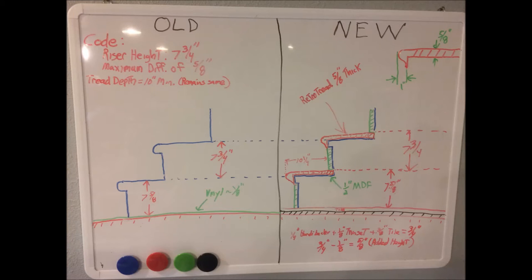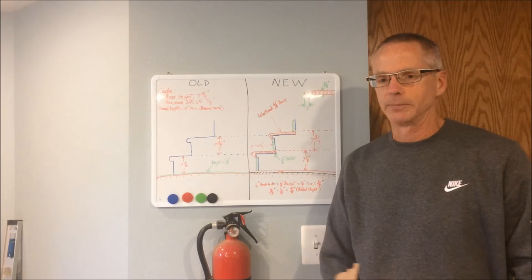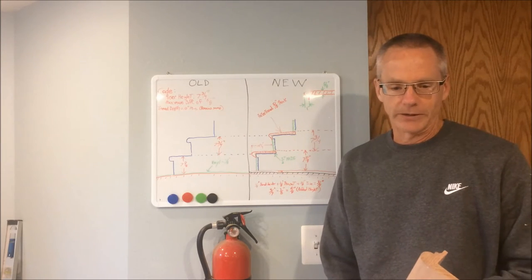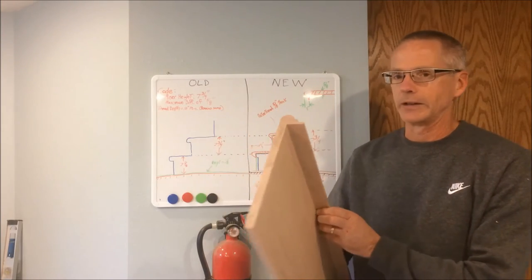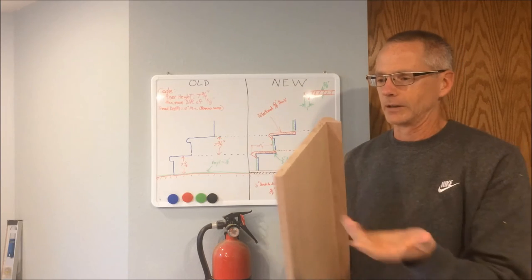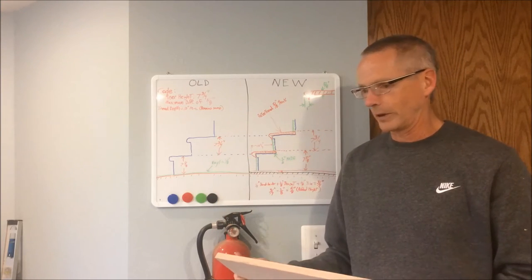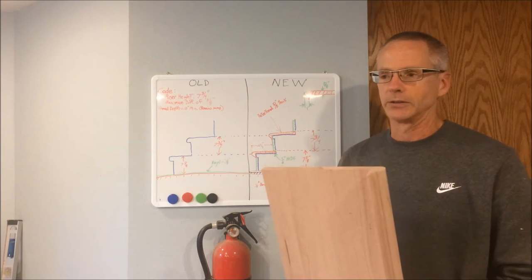I decided to add this additional detail after I did the first video. Probably some critical things which I didn't mention originally. This is the retro tread that I used, I bought it at Lowe's. They come in different widths. I ordered 42 inch and you're going to cut those down to size.